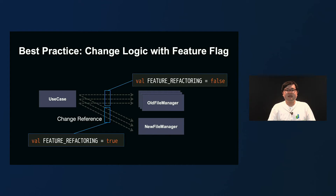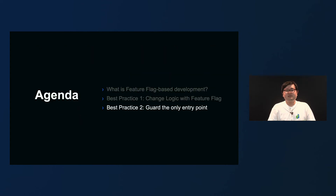So we learned and decided that for file management logic refactoring, we will always use Feature Flag. But with that said, by simply applying the Feature Flag, if you needed to apply it to dozens of places, you could forget some spots. So that brings me to the second best practice: guard the only entry point.